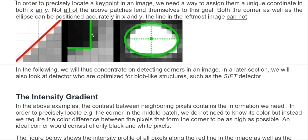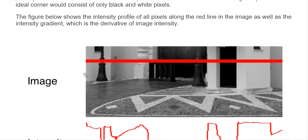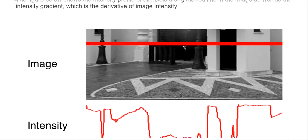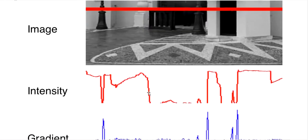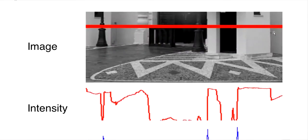The contrast at the corner should be as high as possible. An ideal corner would consist of only black and white pixels. Here is another picture showing the intensity profile of all the pixels along the red line in the image, as well as the intensity gradient, which is the derivative of the intensity. You can see how the intensity and gradient change for all the pixels along the red line.